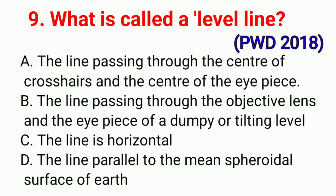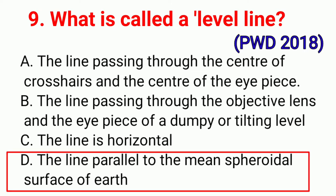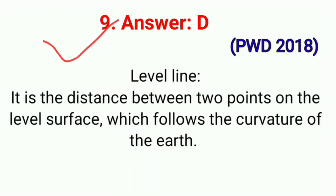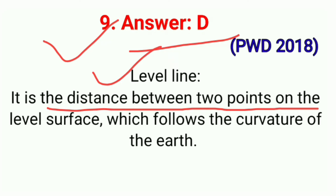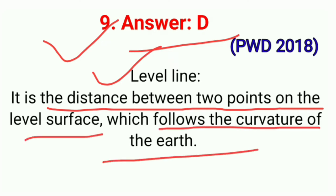Question No. 9. What is called a level line? Correct option D: The line that is parallel to the mean spheroidal surface of earth. A level line is the line between two points on the level surface which follows the curvature of the earth. Correct option D.